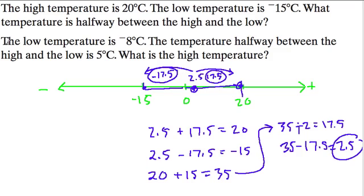Now the next question is that the low temperature is negative 8 degrees. The temperature halfway between the high and the low is 5 degrees. What is the high temperature? So now we're changing it up a little bit. We're saying, oh,